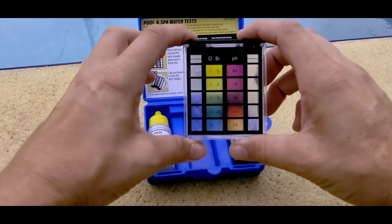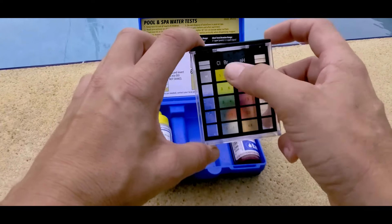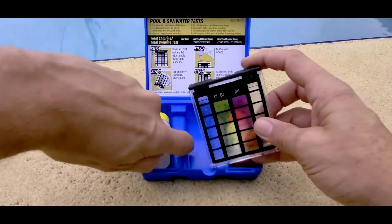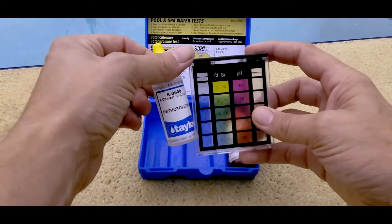So it's pretty simple. All you have to do is fill it up to the little lines here with pool water. And then you take this solution for the chlorine, and you just add five drops of this.